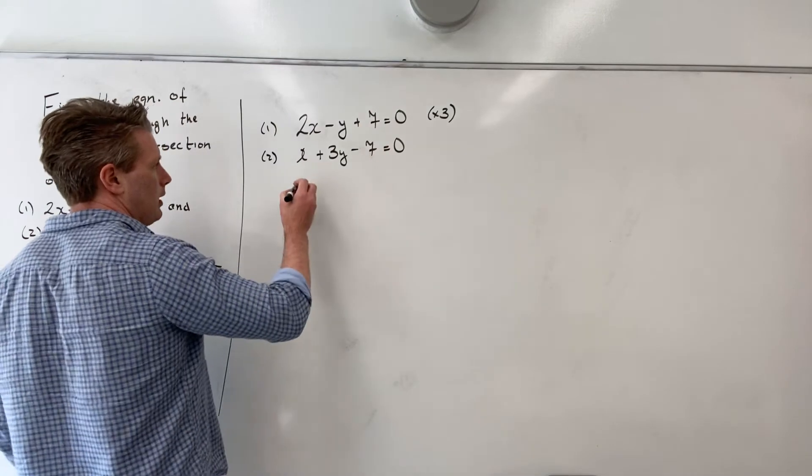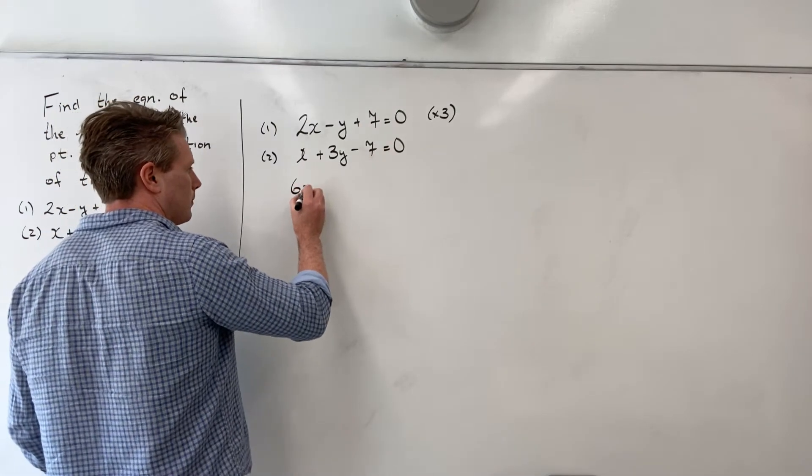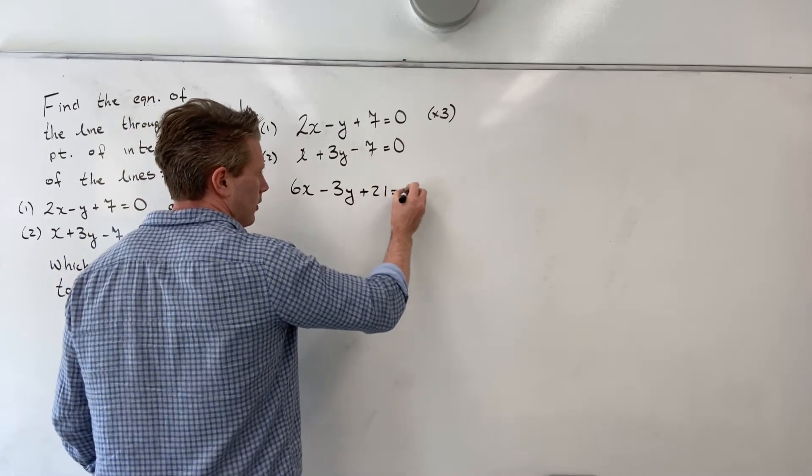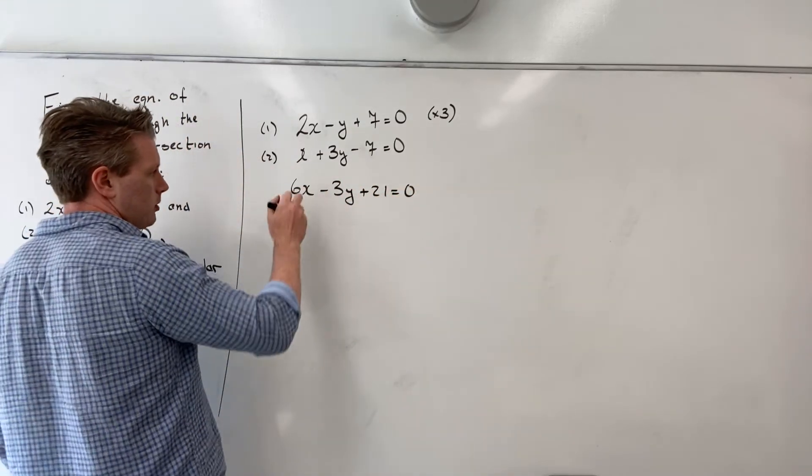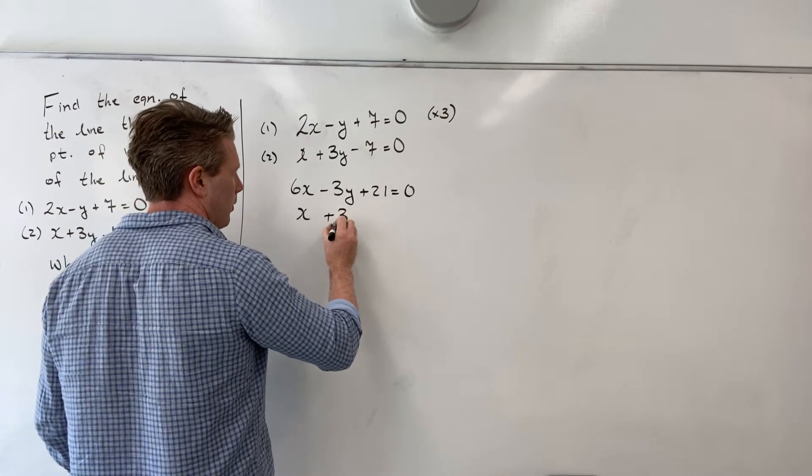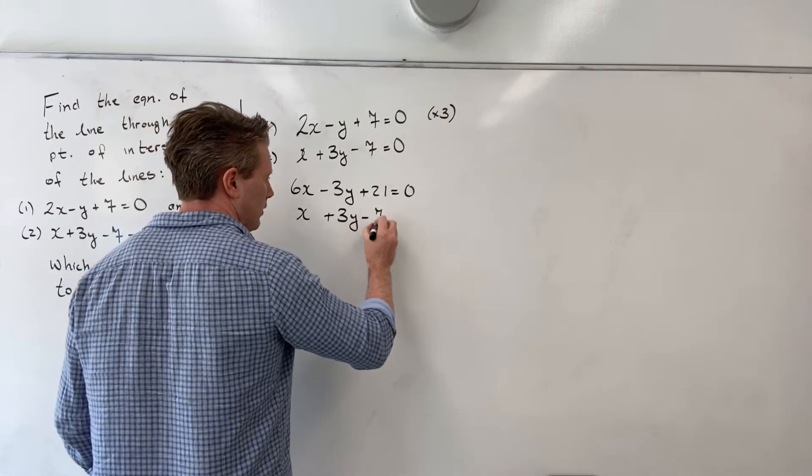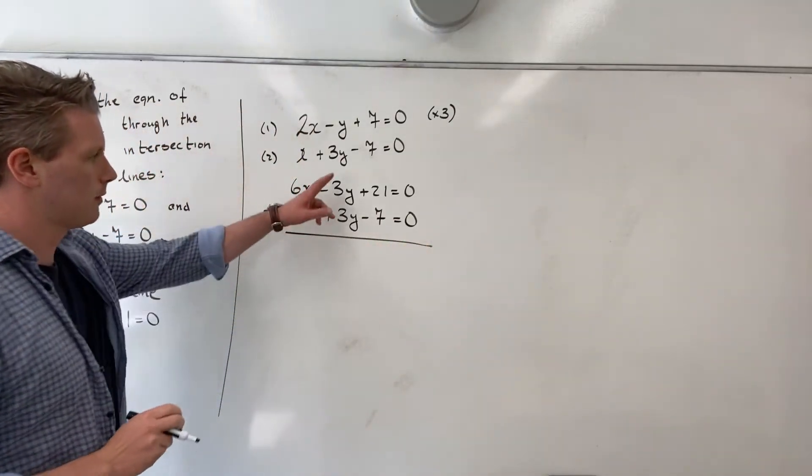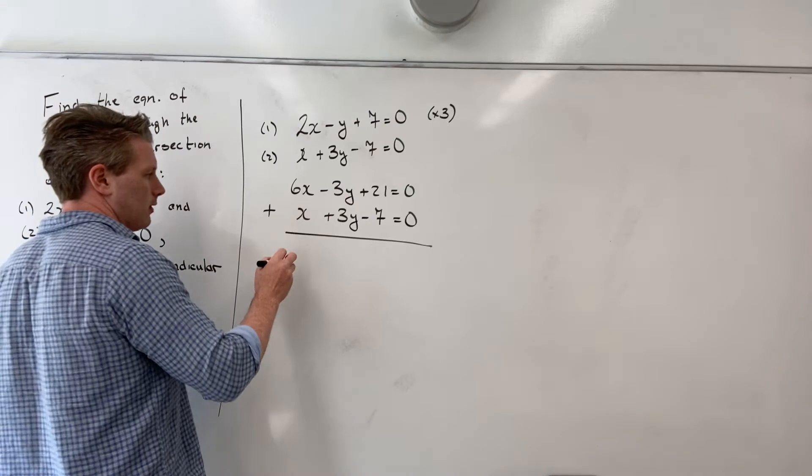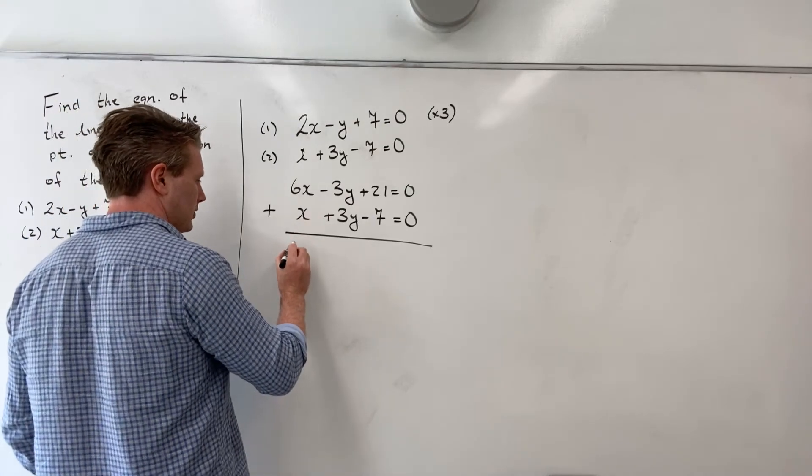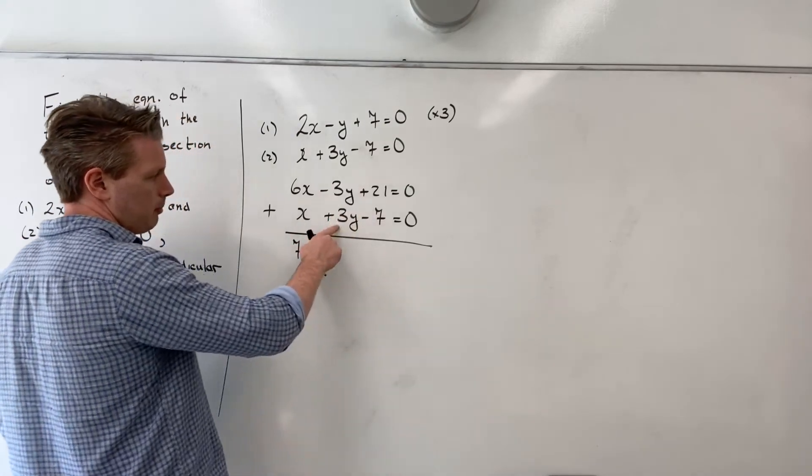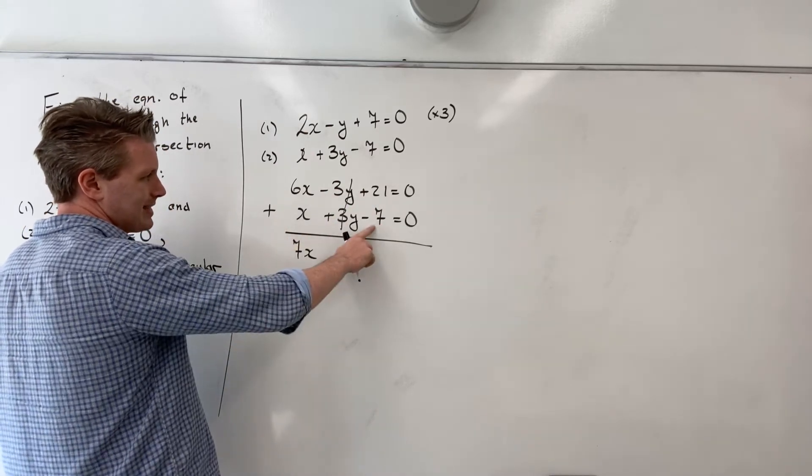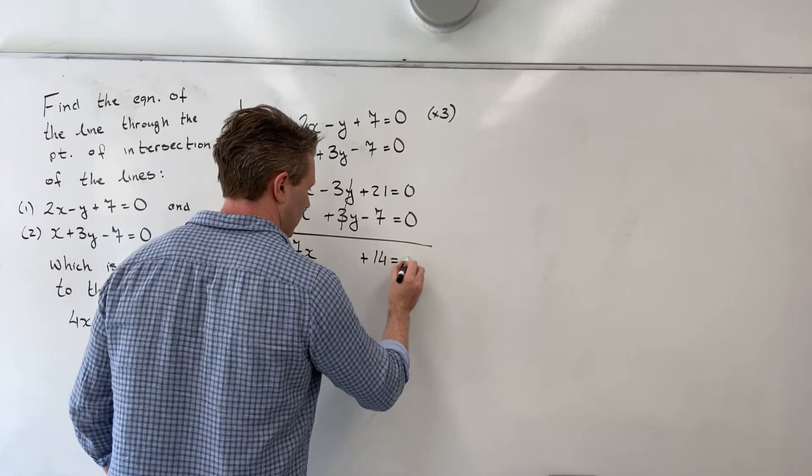Multiplying this top equation by 3, I will get 6x minus 3y plus 21 equals 0. My equation number 2 is the same, it's x plus 3y minus 7 equals 0. Now I know that if I add these two equations together, I will get 6x plus x, which is 7x. My minus 3y plus 3y will cancel. I'll have plus 21 minus 7, that's plus 14 equals 0.